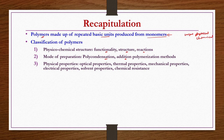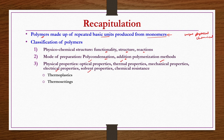Another way of classifying polymers is based on physical properties, such as optical, thermal, mechanical, electrical, and solvent properties along with chemical resistance. Under this physical properties category, you can have thermoplastics—which can be melted and remelted as required—then thermosettings, which once cross-linked cannot be remelted, then elastomers like rubbers, and then fibers, most of which are classified based on physical properties.